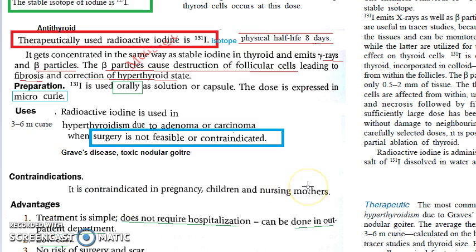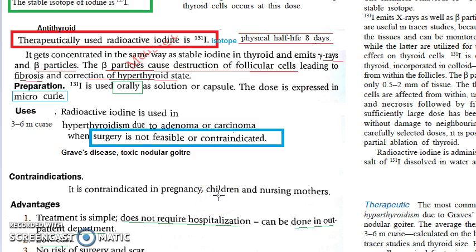Contraindications: do not use in pregnancy, do not use in children, and do not use in nursing mothers. In pregnancy, giving a radioactive substance causes teratogenicity and can destroy the fetal thyroid gland. In children, you will destroy their thyroid and they will become lifelong dependent on thyroxine. For nursing mothers, the concern is similarly protecting the baby.